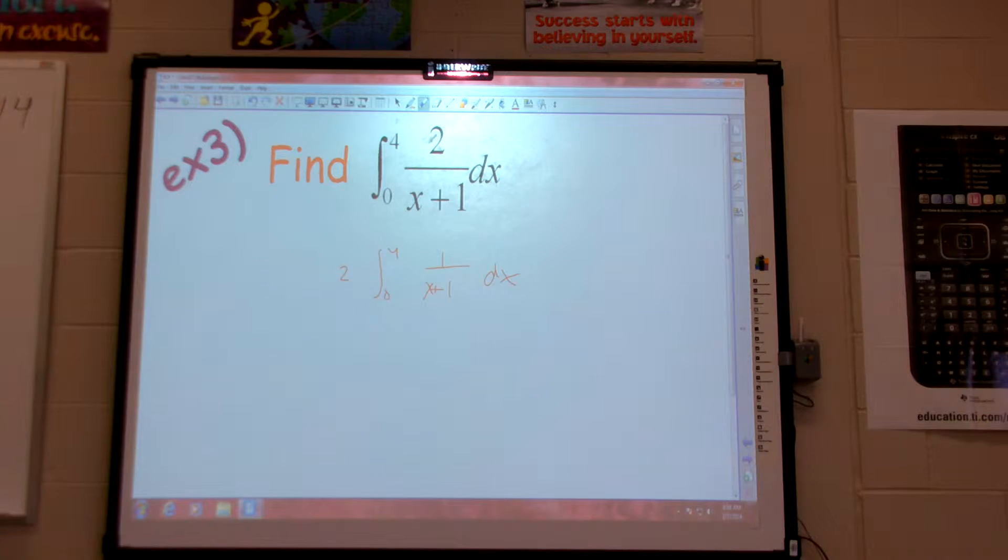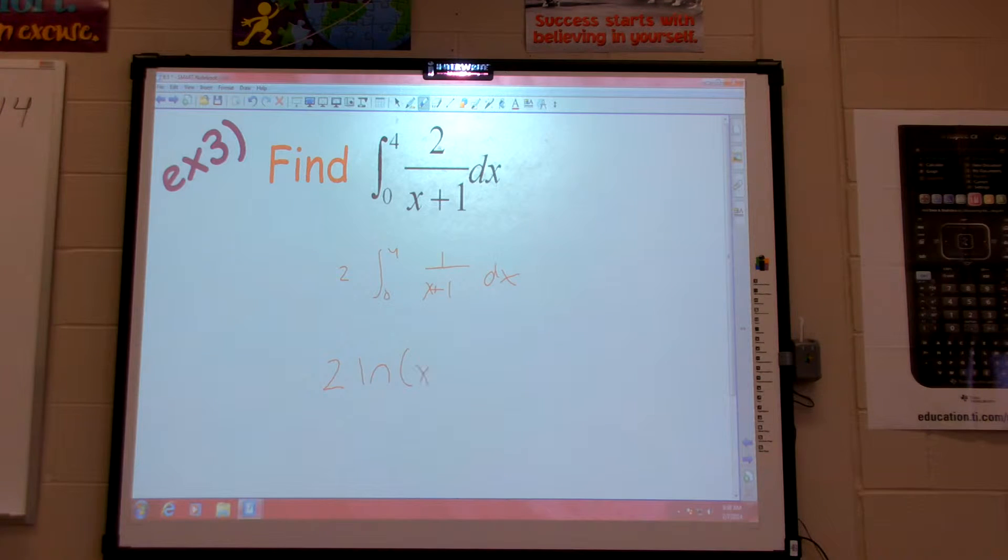If you don't see it right away, I could pull out that constant. The property we just did. And then hopefully you see that is a natural log. So my anti-derivative is two natural log of x plus one. And we're going to evaluate it from zero to four.